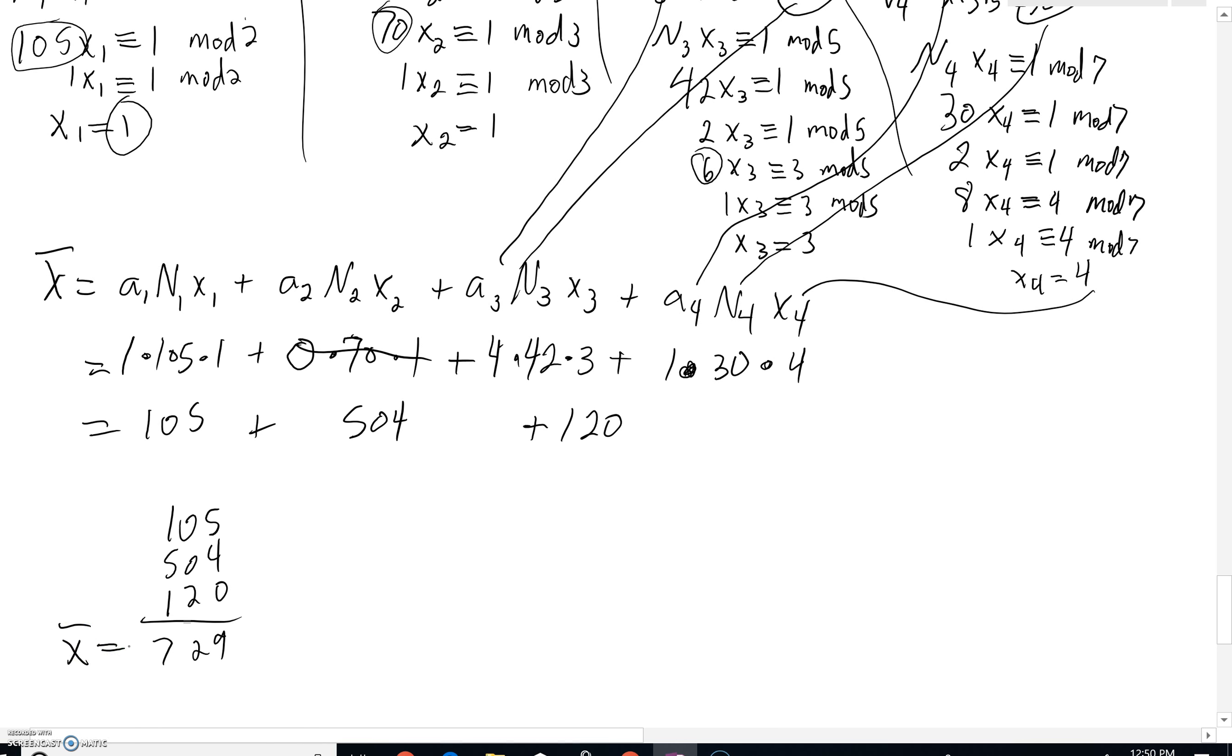But our mod, when you multiplied all of your mods together, the 2 times 3 times the 5 times the 7, even from the original problem, that would be mod 210. But let's just keep subtracting 210. If we subtract 210, we'd get 519. Subtract 210 again. We'd get 309. Let's subtract 210 one last time. And as you do, you would see that you'd get 99.